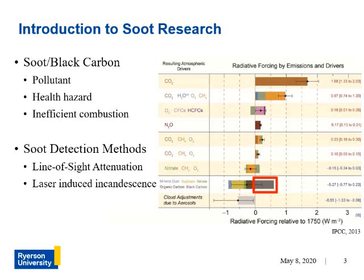Two laboratory methods for detecting soot include line of sight attenuation and laser induced incandescence. These methods are able to detect soot with minimal interference to the flame. Line of sight attenuation works by spotting shadows cast by the soot particles, using a digital camera to detect the loss of a controlled background light source placed behind the flame. Laser induced incandescence also uses camera detection, where a laser is used to excite soot particles into further controlled incandescence.